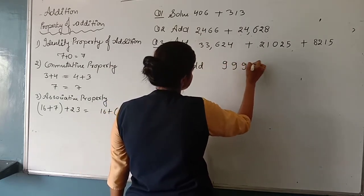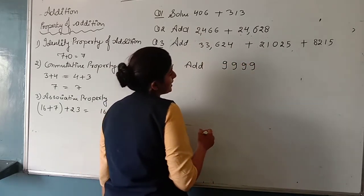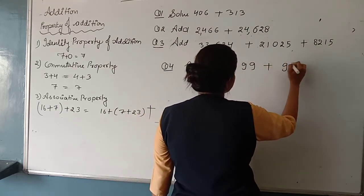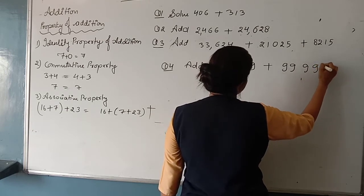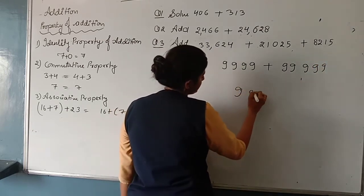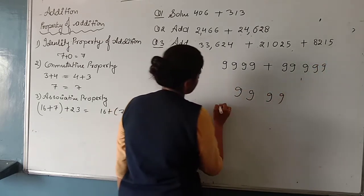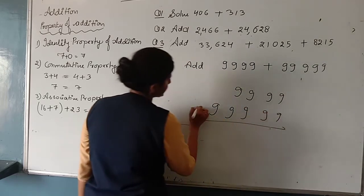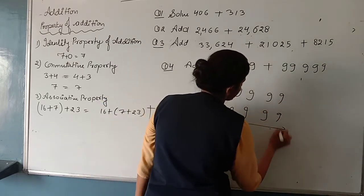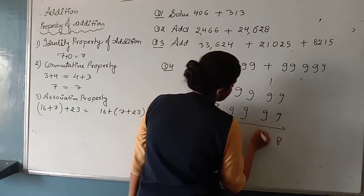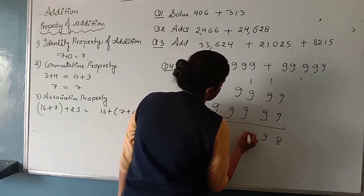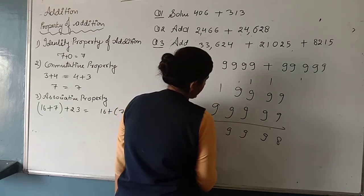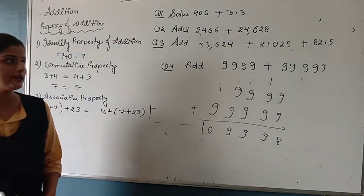9999 plus 9,099 plus 9,999 plus 9,999. We have to add all of these. How will we do it? 9, 9, 9 is 18, 19. This is how we will add. Okay students?